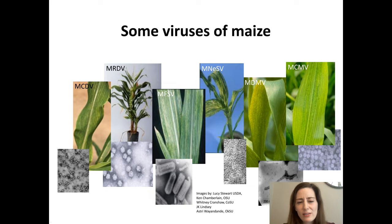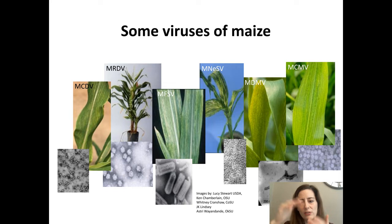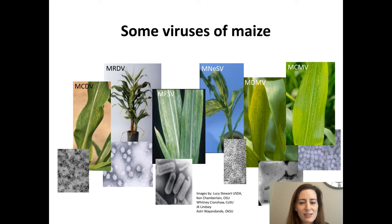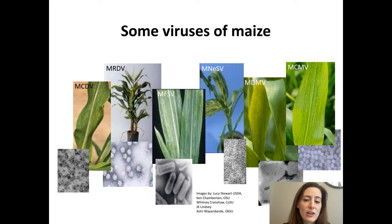Maize rough dwarf virus has some interesting symptoms: the plants have shortened internodes so they're squat and shorter, the distance between leaf nodes is reduced, and the leaves actually become a darker green instead of showing yellowing. This virus also causes tiny little plant tumors, or enations, on the veins underneath. And maize chlorotic dwarf virus, true to its name, causes dwarfing and is found just in the veins, where those veins are yellow where the virus is. These are just a few of the symptoms caused by viruses, and if you start looking for plant viruses, they're everywhere.